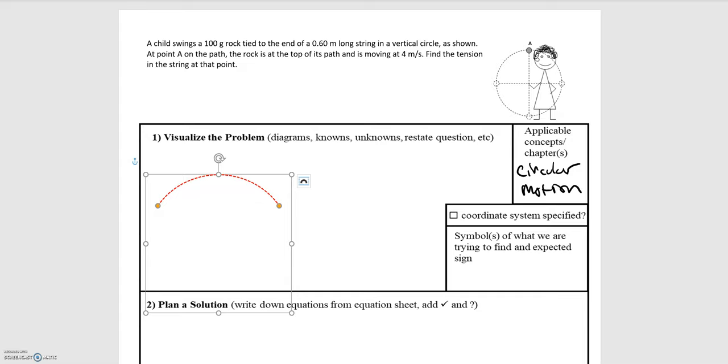In this video we'll be going over the example of a child swinging a rock. We have a child swings a 100 gram rock tied to the end of a 0.6 meter long string moving in a circular path, and we're asked to look at when the rock is at point A. We're told that at that point it's moving at a speed of 4 meters per second. We're asked to find the tension in the string.